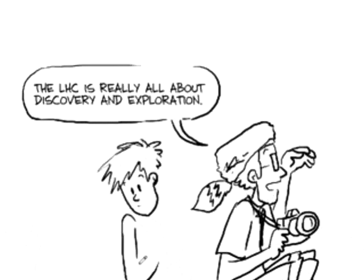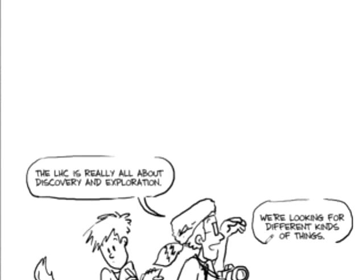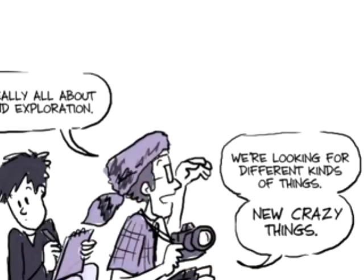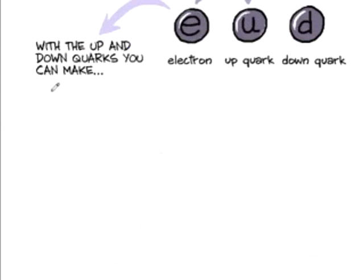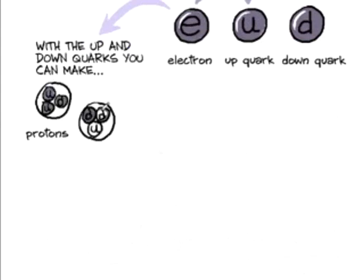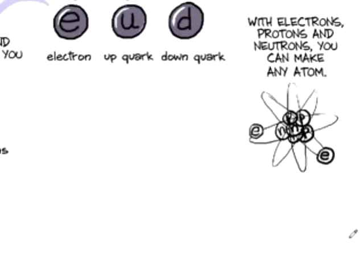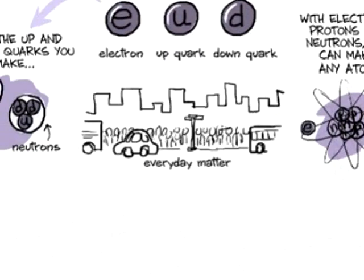The LHC, it's really all about discovery and exploration. We're looking for different kinds of things, new, crazy kinds of things. I mean, to make up everyday matter, you only need the electron, the up quark, and the down quark. Because with the up quark and the down quark, you can make a proton, or you can make a neutron. Electrons and protons and neutrons, you can make any atom. So you only need these three.